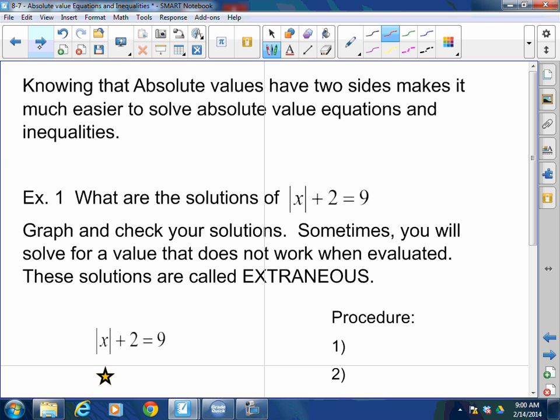Knowing absolute value has two sides makes it much easier to solve absolute value equations and inequalities. For example, what are the solutions of |x + 2| = 9? Graph and check your solutions. You always want to check your solutions for absolute value because sometimes you will solve for a value that does not work when evaluated. And as we know, these solutions are called extraneous.